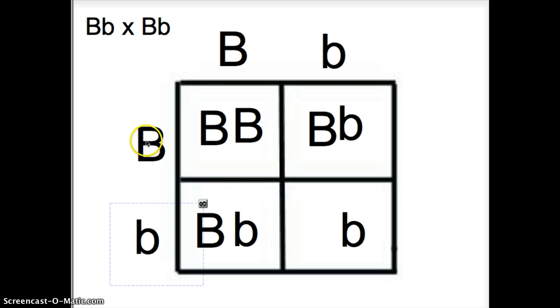Oh see, I messed up—it should be a little b, little b. Okay, so now we have the correct Punnett square.